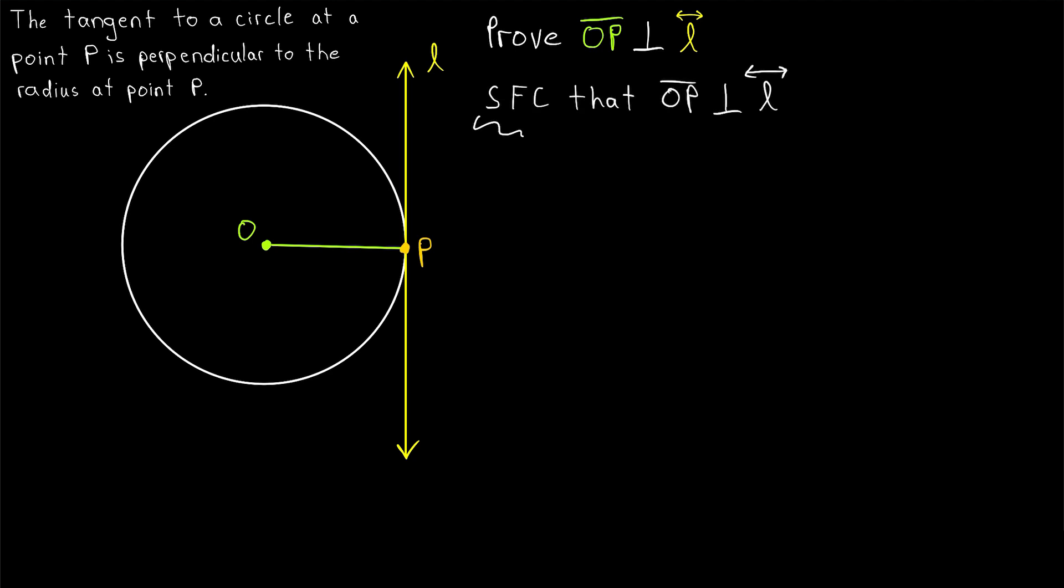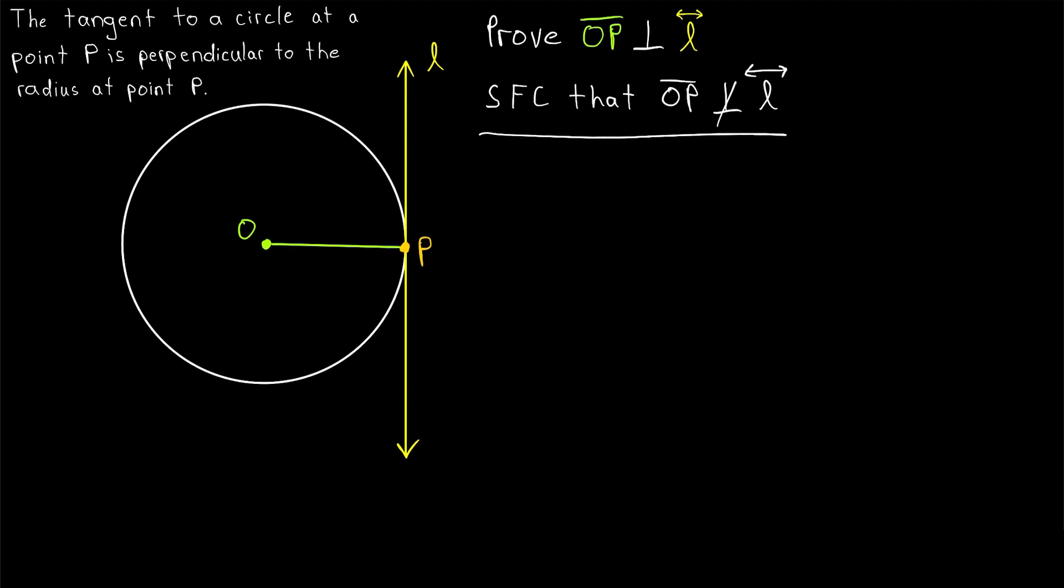This is going to be a proof by contradiction, so we'll suppose the opposite of what we want to prove. We'll suppose for contradiction that the radius OP is not perpendicular to the tangent L. Remember how a proof by contradiction works. We suppose the opposite of what we want to prove and show that leads to a contradiction. Thus, the opposite of what we assumed must be true, to avoid the contradiction.